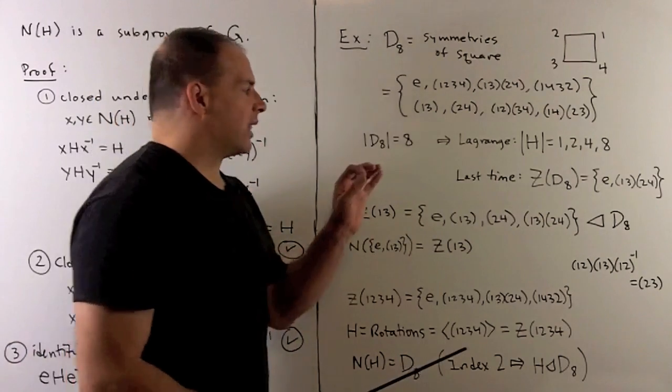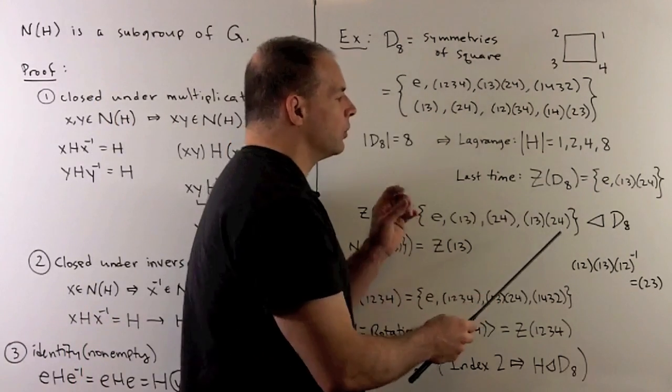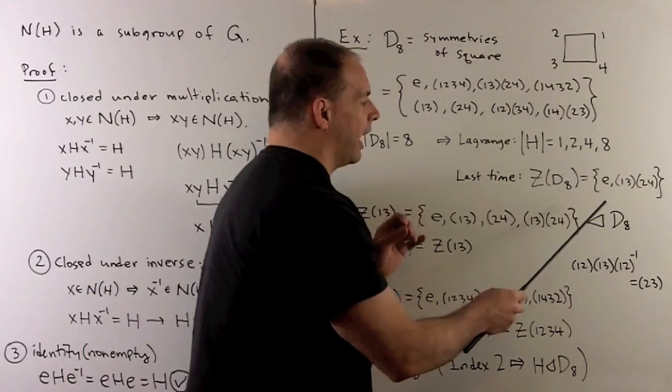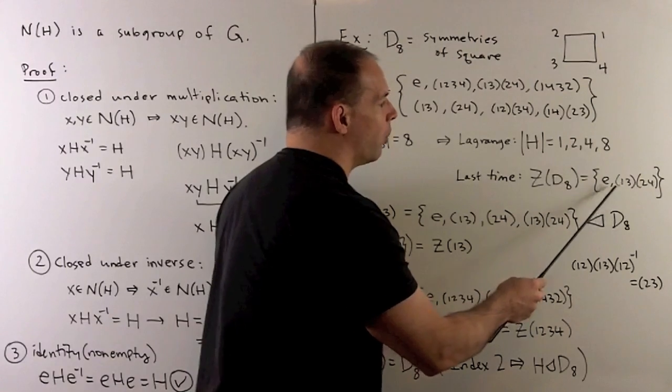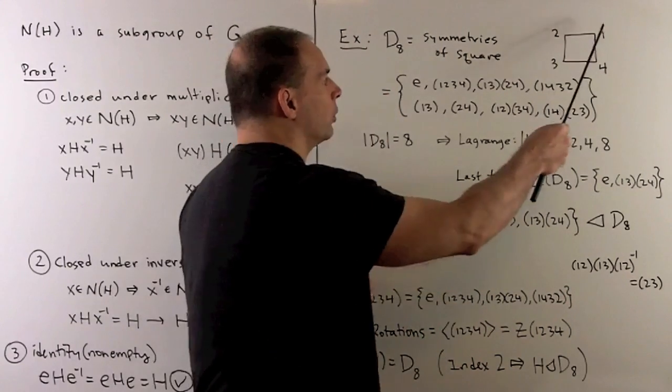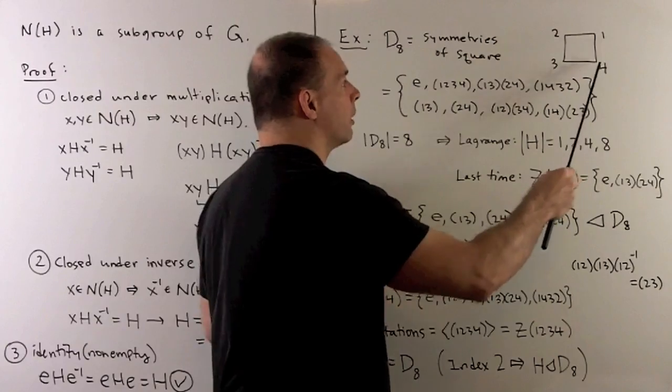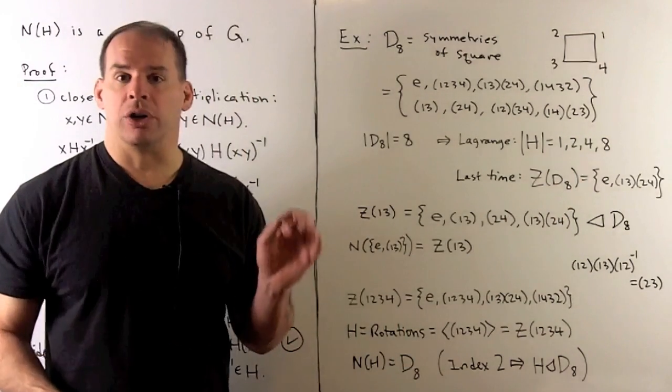We've also seen that the center of D8 equals the identity and the product of disjoint two-cycles (1,3)(2,4). Note, one goes to three, two goes to four - we're rotating by 180 degrees.